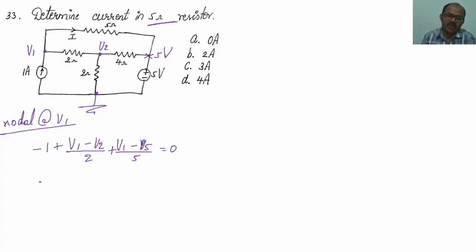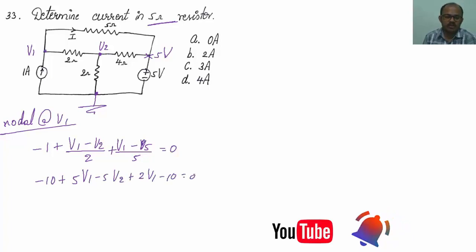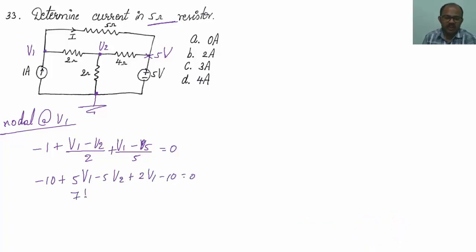Solving this, I get: minus 10 plus 5 times V1 minus 5 times V2 plus 2 times V1 minus 10 equals 0. Simplifying: 7V1 minus 5V2 equals 20. Let me call this equation 1.